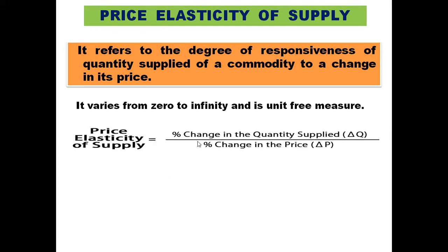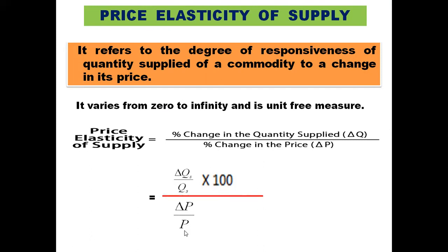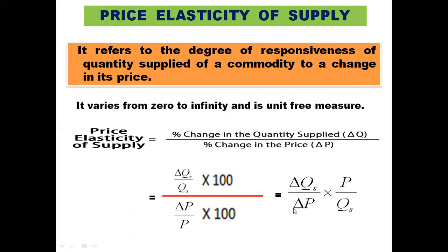The formula is: percentage change in quantity supplied divided by percentage change in price, which simplifies to (ΔQs / Qs) × (P / ΔP). The 100s cancel out, leaving ΔQs in the numerator and ΔP in the denominator, multiplied by P/Qs. Price elasticity of supply is always a positive number because price and quantity supplied are positively related, unlike price elasticity of demand which is negative.